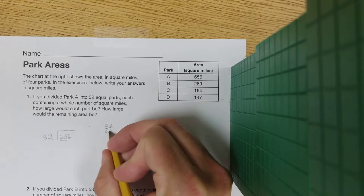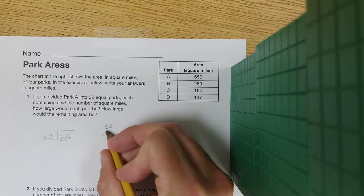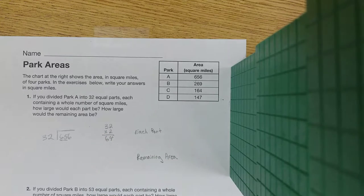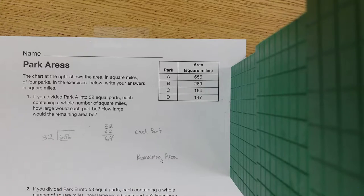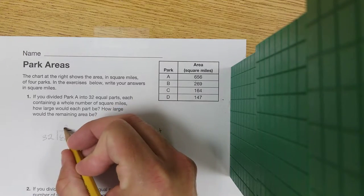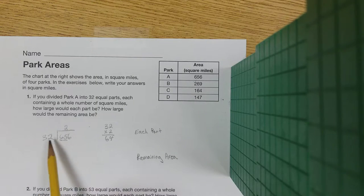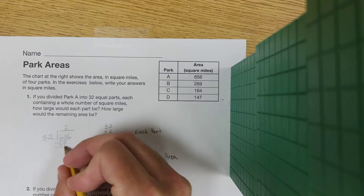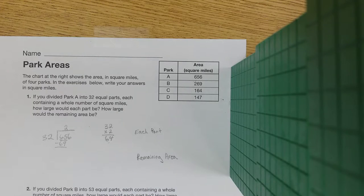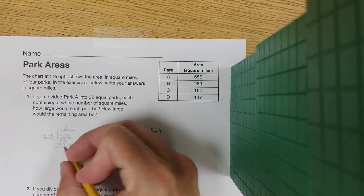So we're going to take 32 times 2. 2 times 2 is 4, 3 times 2 is 6, which is 64, which is smaller than 65 so that will work. I'm going to put my 2 above the 5. 2 times 32 is 64, so I'm going to subtract 64 from 65 and I'm left with 1.